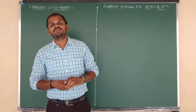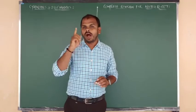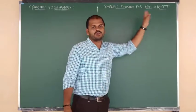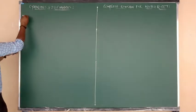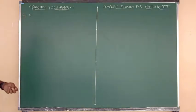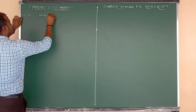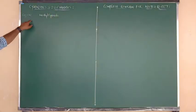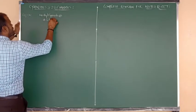Hello, dear students, welcome back to chemistry class. In today's class, for the purpose of competitive exam preparation, I'm going to give you a complete revision of cyanides and isocyanides. First, I want to start with nomenclature. For example, the compound CH3CN — its common name is methyl cyanide, and another common name is acetonitrile. This is very important for you.